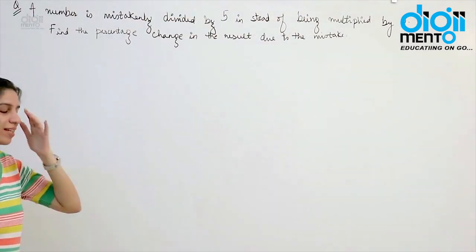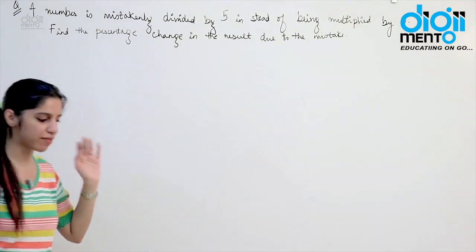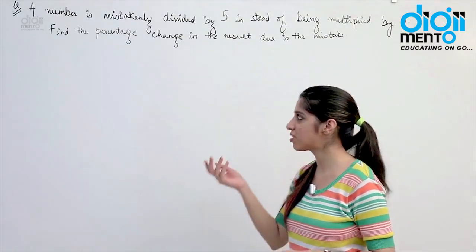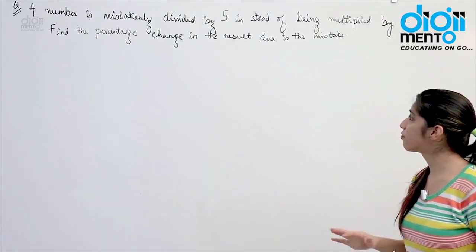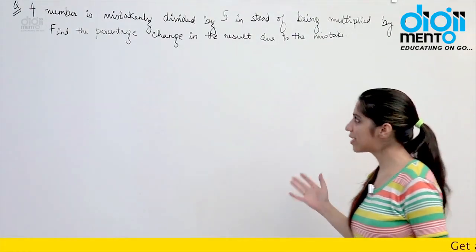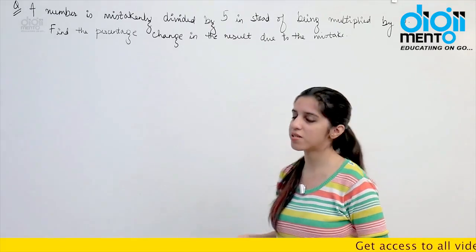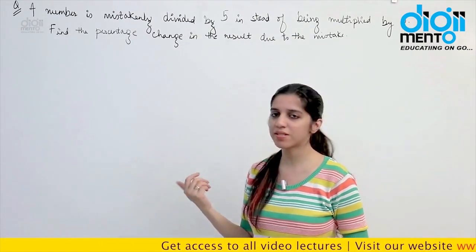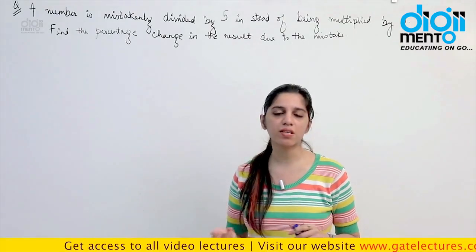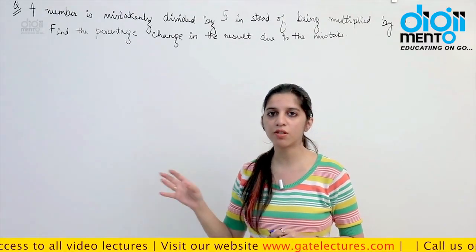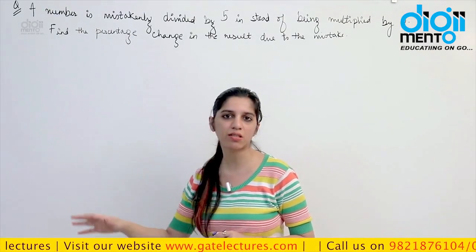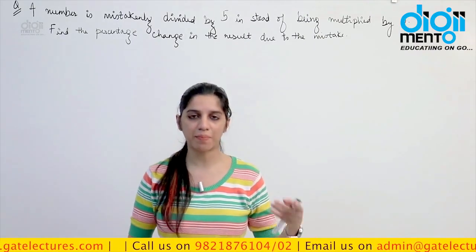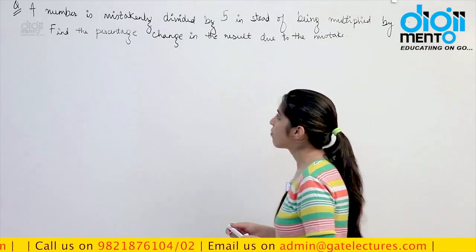They are given that a number is mistakenly divided by 5 instead of being multiplied by 5, and they are asking you to calculate the percentage change in the result. Whenever we are dealing with percentages, it is better to consider the number as 100. Since they are asking in percentage only, any number you consider is not going to make a difference. Even if you consider some variable, ultimately it is going to be cancelled out. So consider 100 to make calculations easier.